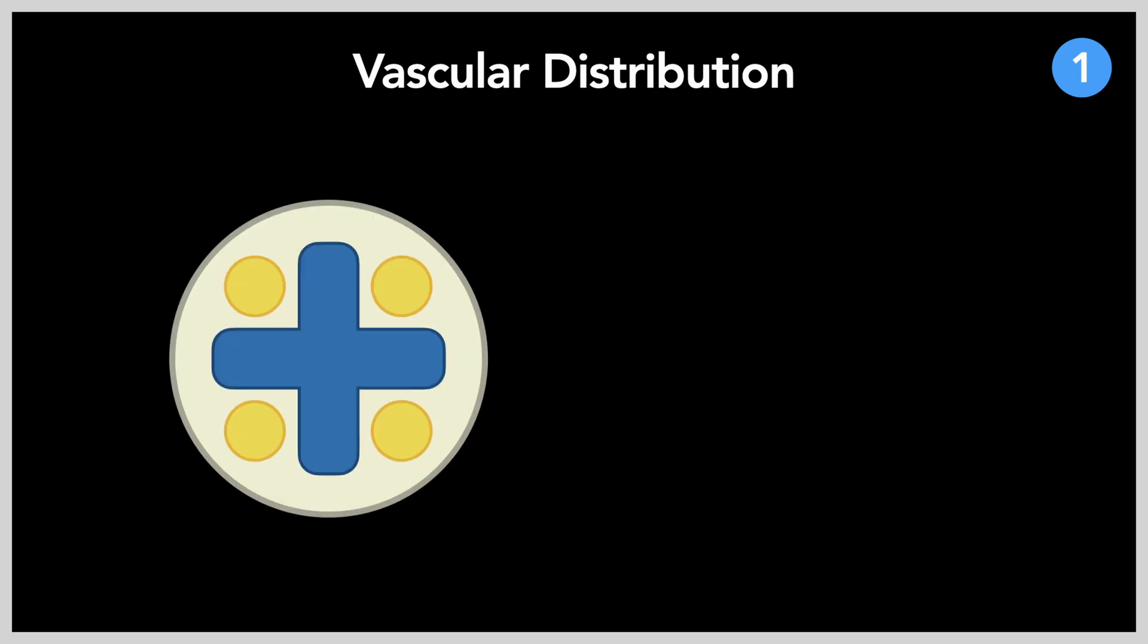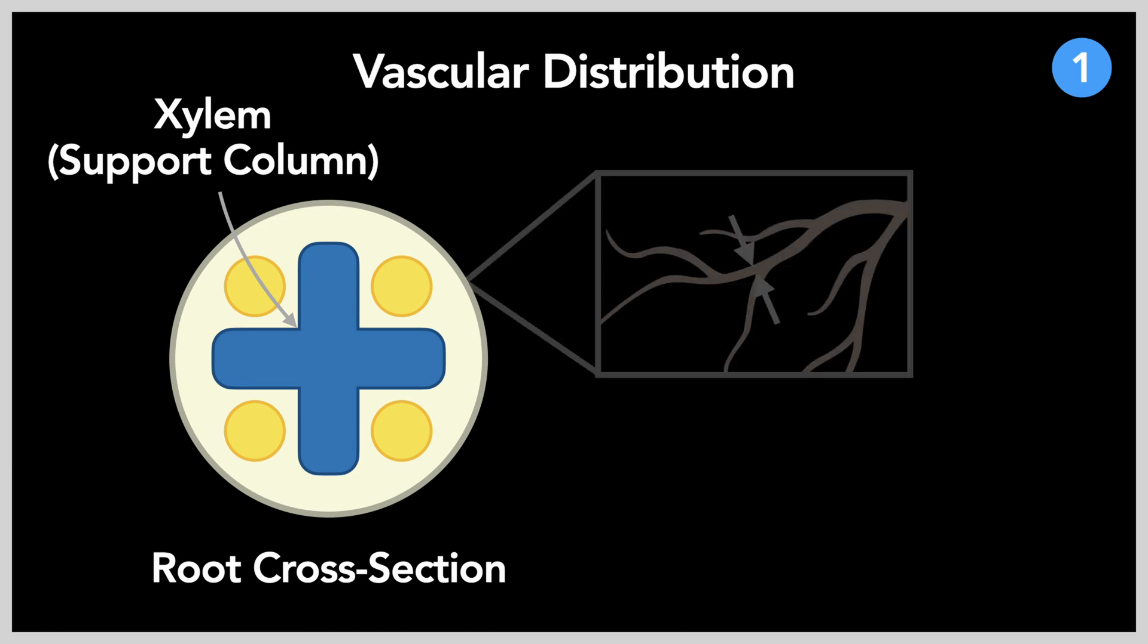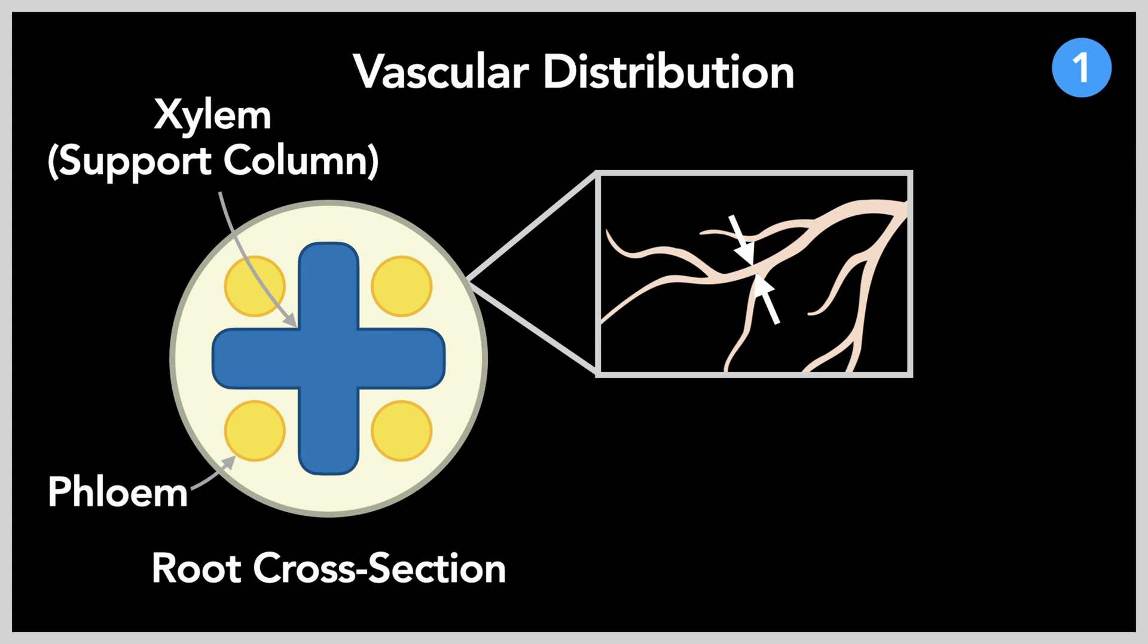The distribution of xylem and phloem vessels vary between different parts of the plant. As you can see here in the cross-section of a root structure, the xylem forms a singular support column. The lignin-reinforced tubules support the root structure against the compressive forces of surrounding aggregate or soil. Roots still need a supply of glucose from the leaves, thus the phloem tubes are still located outside the xylem.